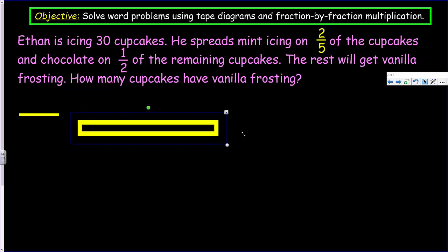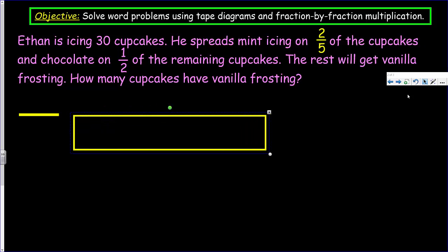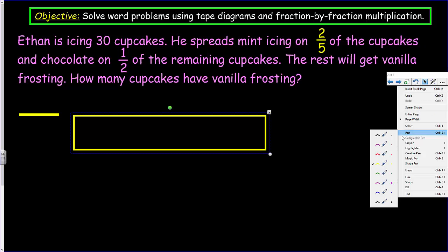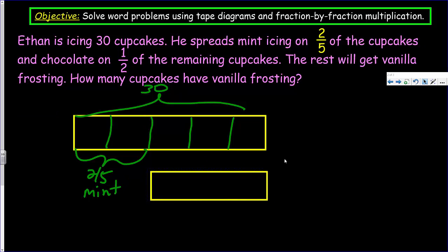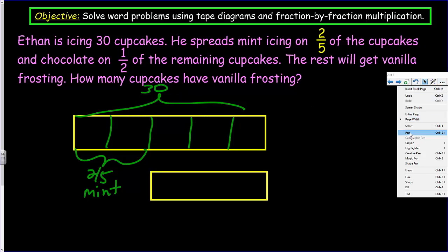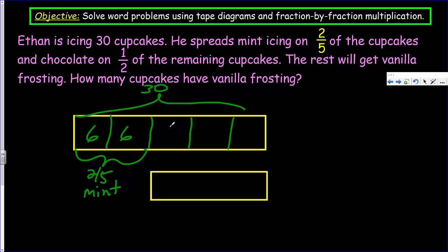What did we do last time? We've got that tape diagram out. And we said that we wanted to show that hole. And I'll go ahead and do that. Let me get my green here. I guess that's 30 cupcakes. That was the hole. But this time, we have one-fifth, two-fifths, three-fifths, four-fifths, and five-fifths. But now we're saying that two-fifths of the cupcakes have the mint icing.